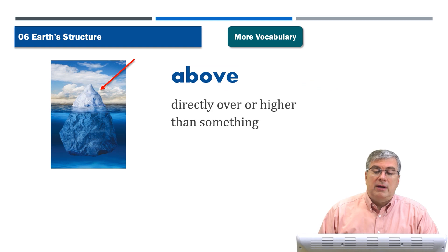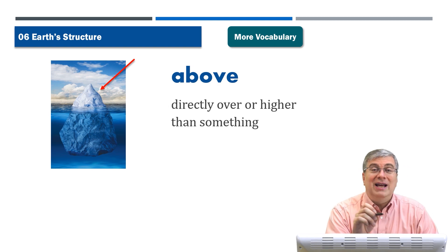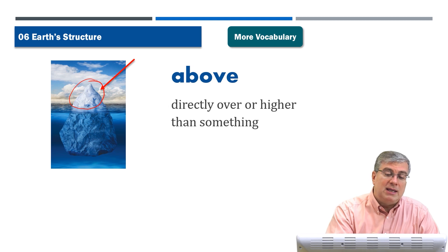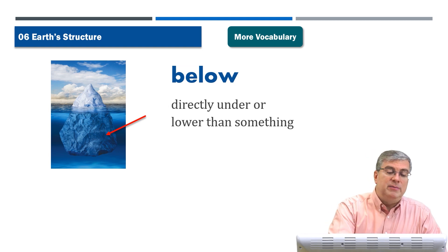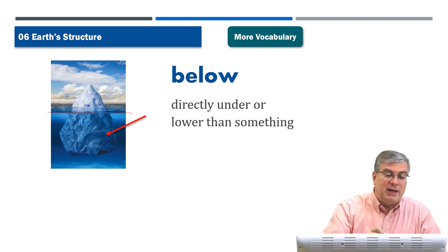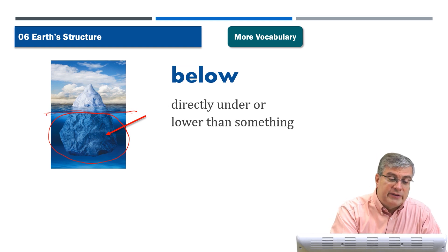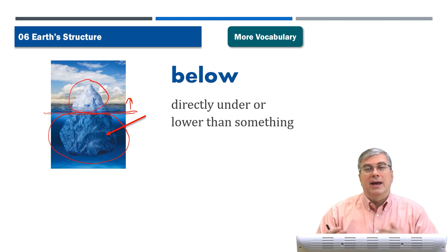Above means something that is directly over or higher than something. It shows the old idea of an iceberg — 90% of the iceberg is below water, 10% is above water. So the part of the iceberg above the surface of the water is 'above,' and the opposite is 'below.' Below means to be under something or lower than something. Above and below — they are direct opposites.